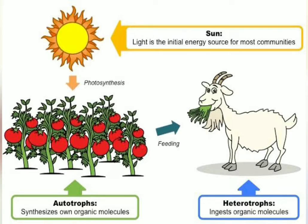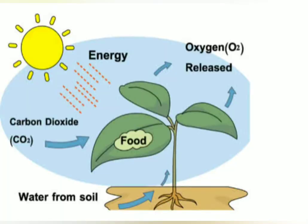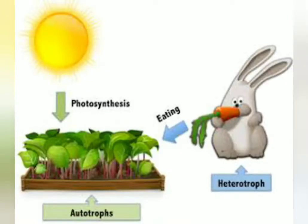Autotrophs are green plants. The plants prepare food by photosynthesis using solar energy, carbon dioxide, and water. As the food is prepared in the leaves, the leaves are called the food factories or kitchen of the plants. All other animals that depend on the food prepared by plants through photosynthesis, either directly or indirectly, are called heterotrophs.